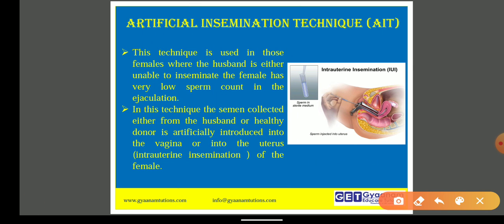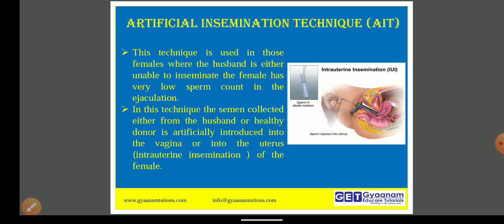Next is the artificial insemination technique. As the name suggests, insemination means release of sperm inside the vagina. The sperm travels towards the uterus and then to the fallopian tube, where fertilization happens. In this condition, the husband is unable to inseminate, or the quality or quantity of sperm is low. So donors can be selected to donate the sperm, or the husband's sperm is artificially injected inside the vagina by a doctor or expert.